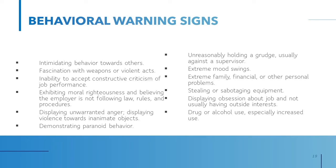It's important to be aware of other people's behavior at work and read the signals they send about their mood or emotional state. Some behavioral warning signs that might indicate potential violence from a co-worker, customer, or the general public include: intimidating behavior towards others, a fascination with weapons or violent acts, an inability to accept constructive criticism on job performance, displaying unwarranted anger, and displaying violence towards inanimate objects — throwing items around or stomping on something.